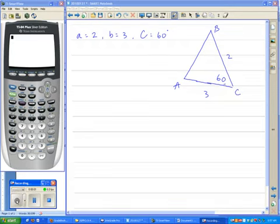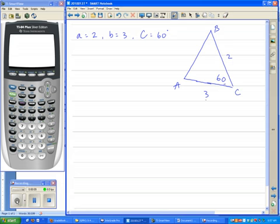Hey, FreeCal kids. Let's take a look at this example here. We have baby A is 2, baby B is 3, and angle C is 60.